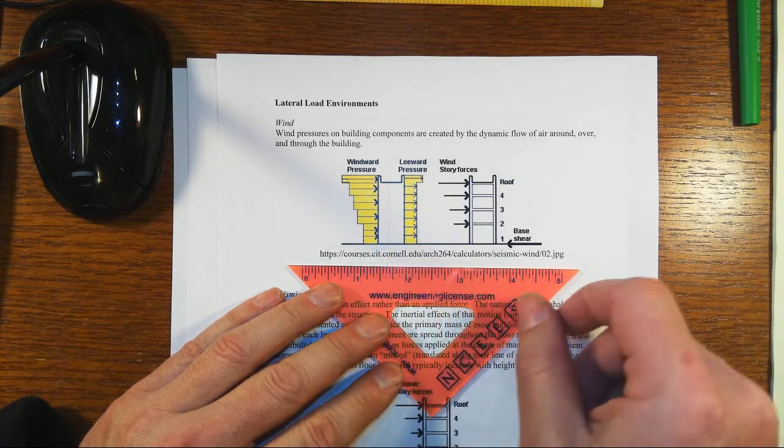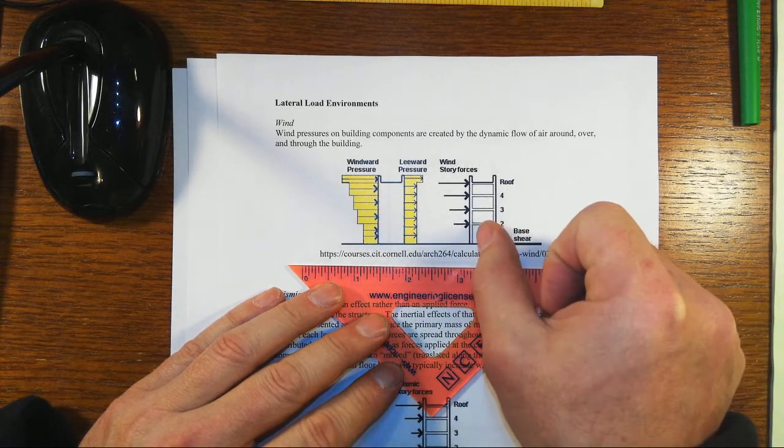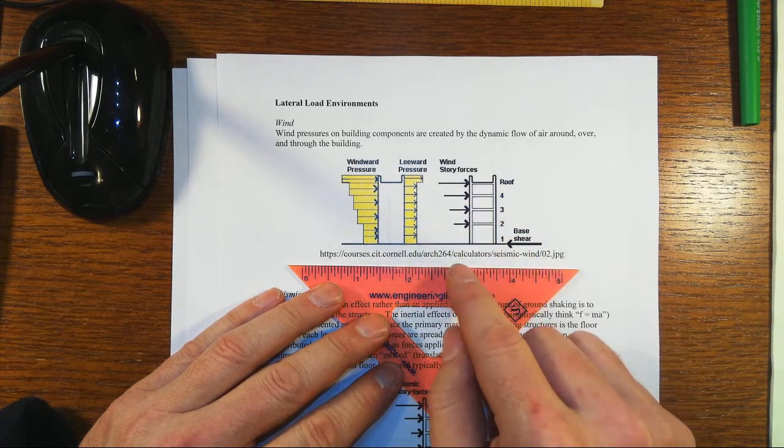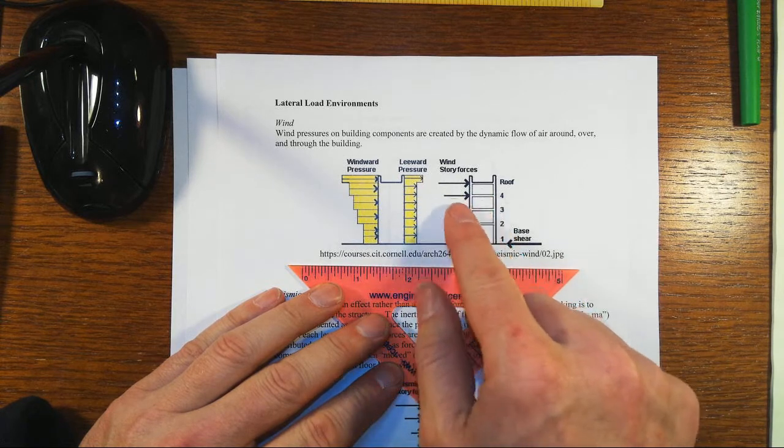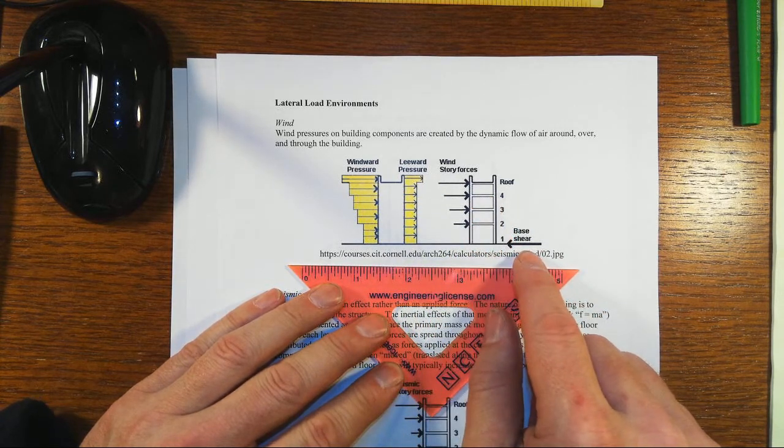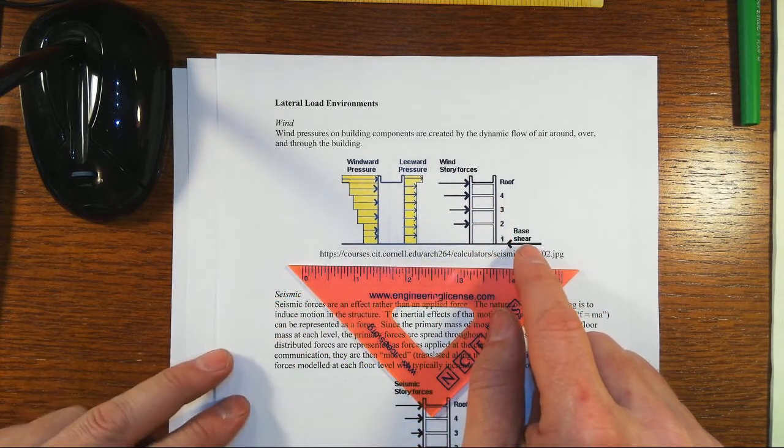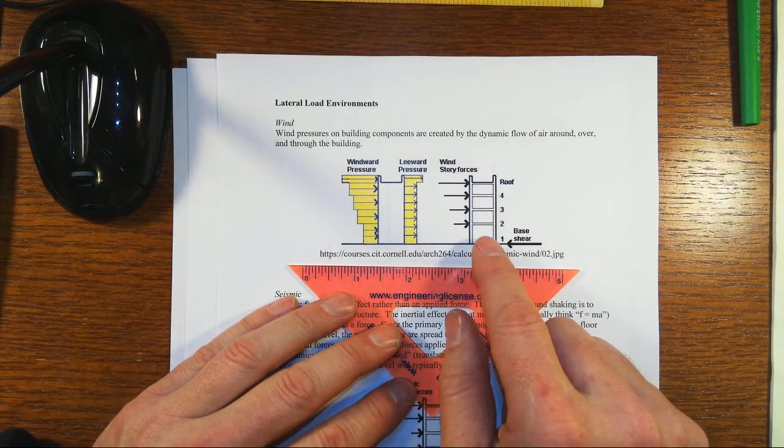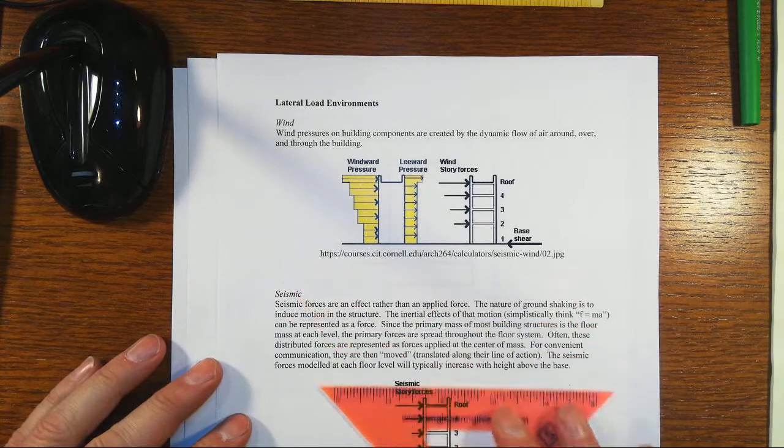That will get translated through usually tributary type action into forces that are concentrated at the roof level. Then that will result in these lateral forces into some level of base shear that we have to resist, as well as potentially some upward effects that are not shown in the simplistic view of wind forces.